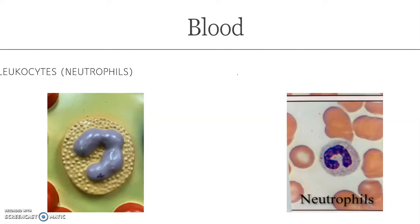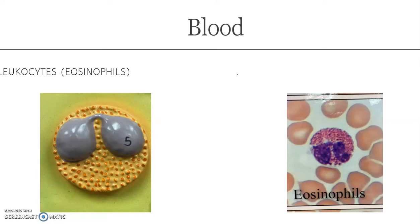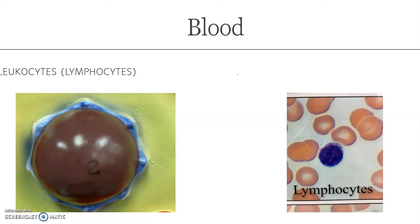Our neutrophils, basophils, and eosinophils are part of a group of white blood cells called granulocytes. They are called granulocytes because they have stained granules within their cytoplasm. The last two types of white blood cells — lymphocytes and monocytes — are part of a group called agranulocytes, meaning without granules, so they do not have granules within their cytoplasm.